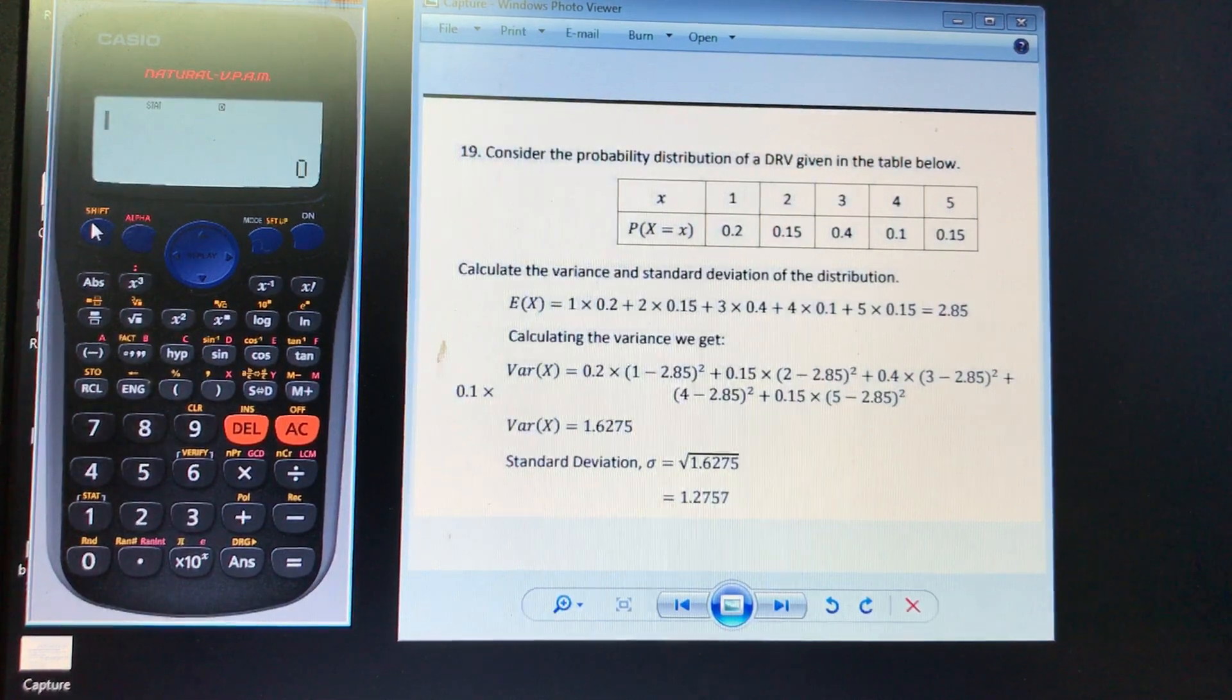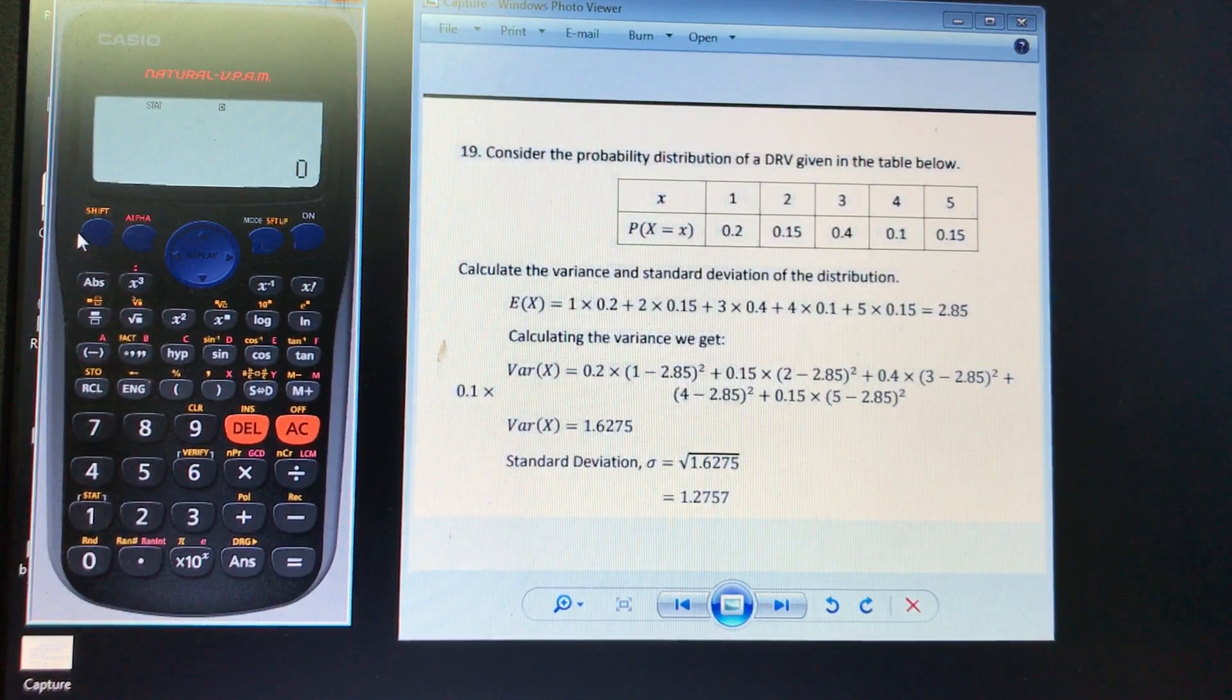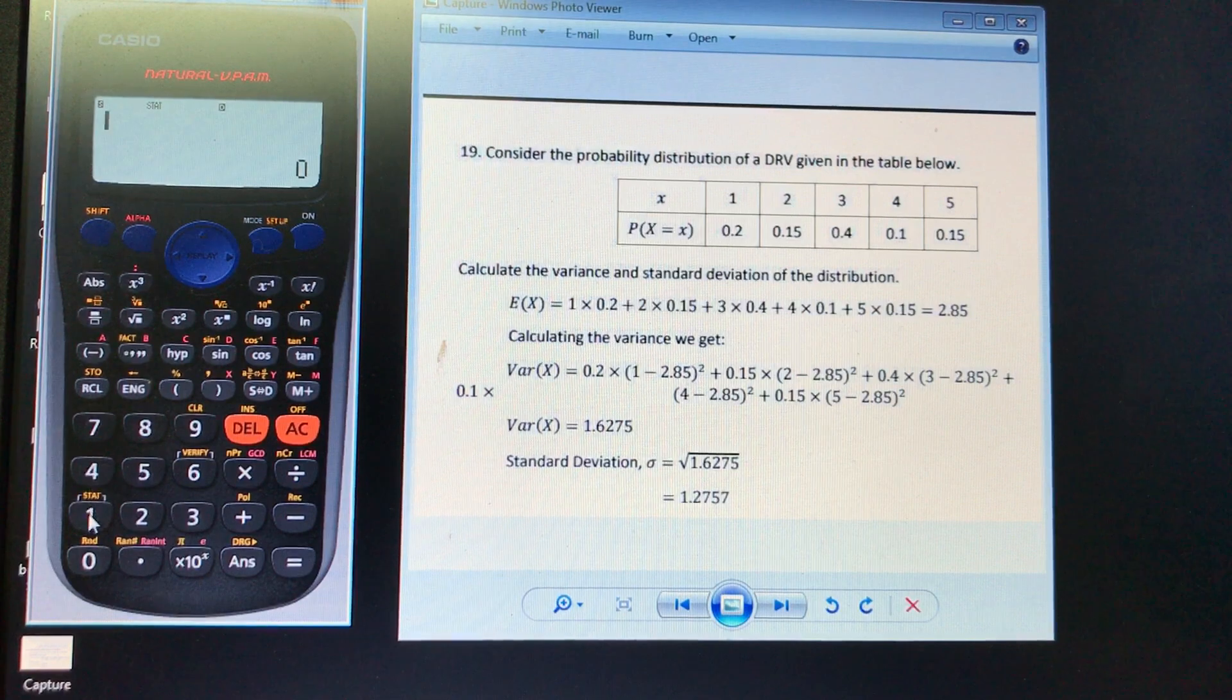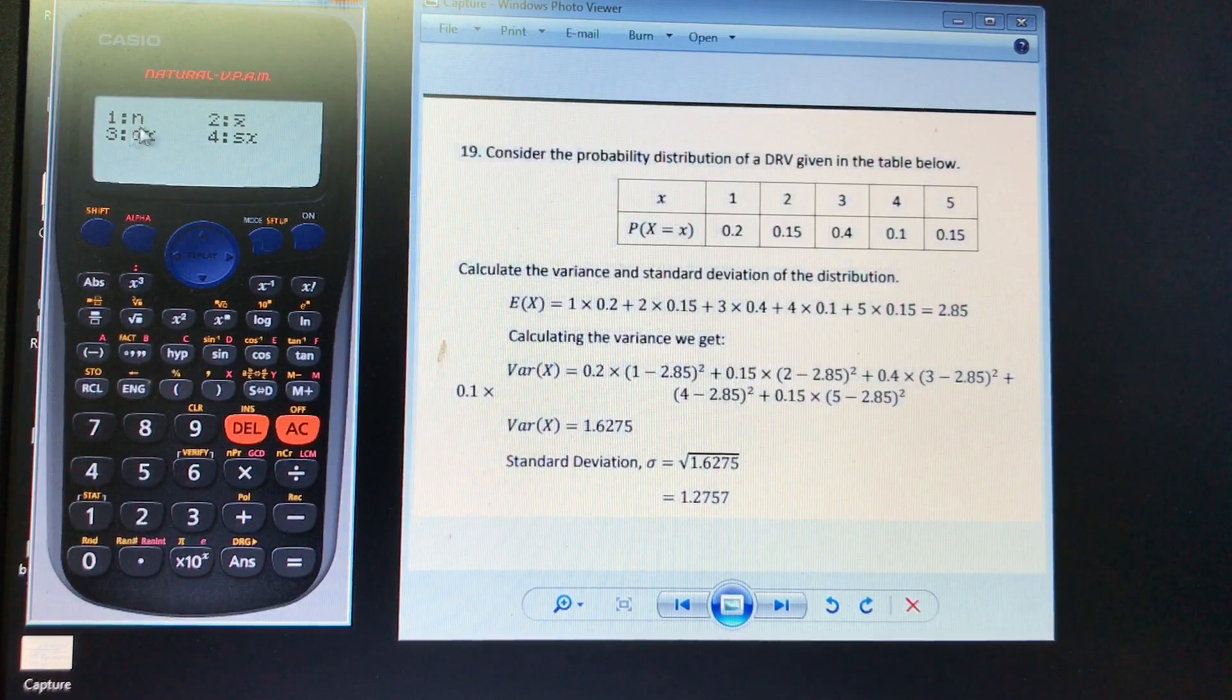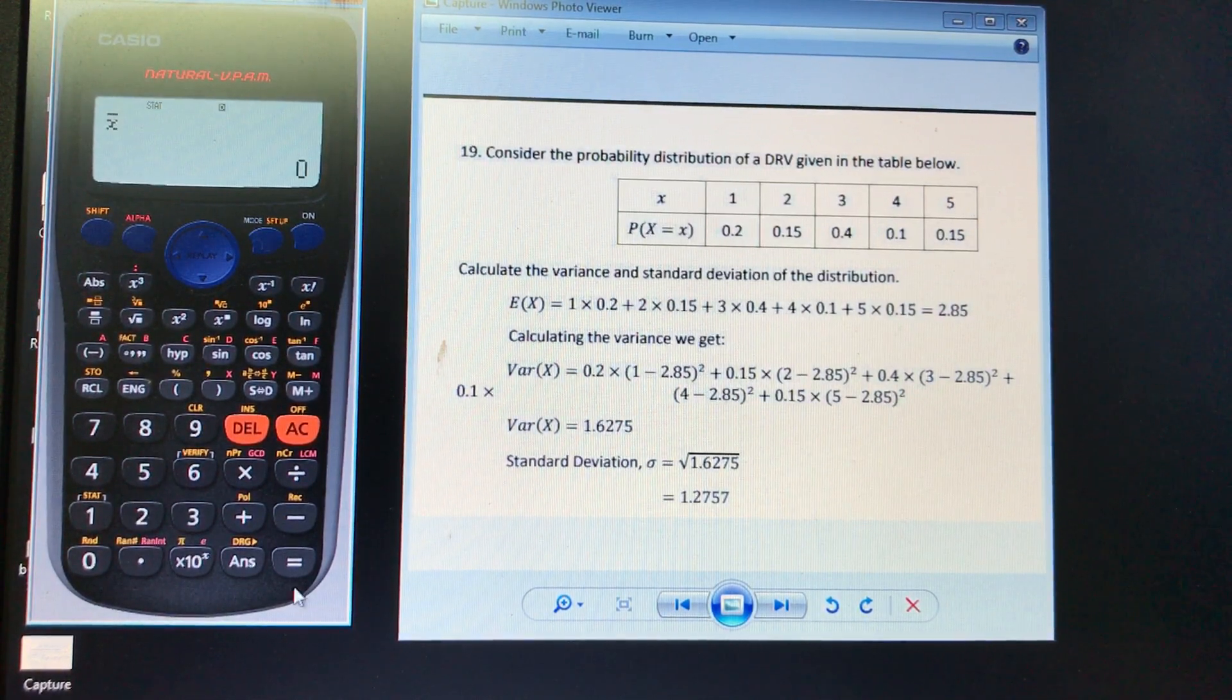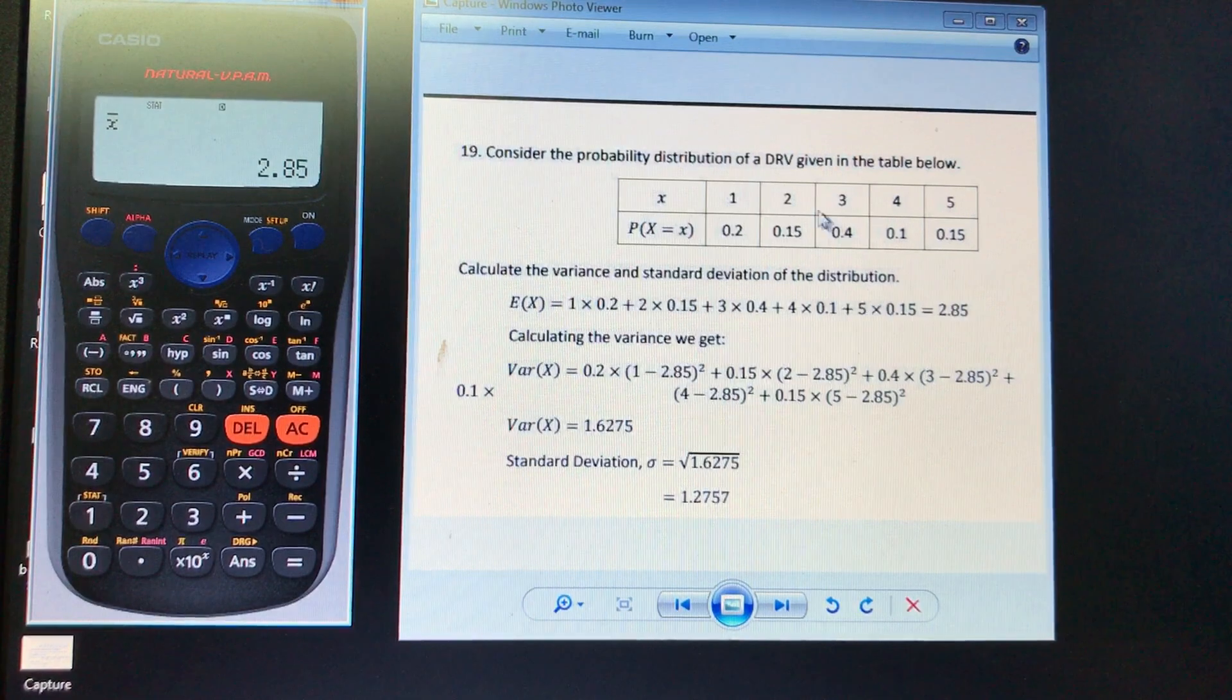What we're going to do, remember that the expected value and the mean of a data set are the exact same thing. So to quickly go through two ways to find the expected value you can go. So again, shift 1, go into our stats and we're going to go into our variables, our variance. Go 4 and x bar, option 2 is our mean and when we go our mean we get 2.85, which is what we expect from, we can see from the question.